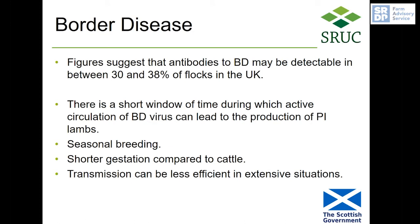If you blood sample a range of flocks across the UK, you'll probably find antibodies to border disease in around a third of them. But I would be surprised if a third of people listening to this presentation are aware of border disease being present in their flock. There are a couple of reasons for that: infection outside of pregnancy causes no clinical signs, and also because of sheep movement, an animal could be infected in its flock of birth and then move to a different holding. Finding antibodies doesn't necessarily mean border disease is currently present in that flock.